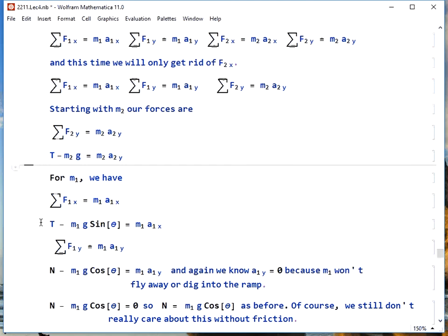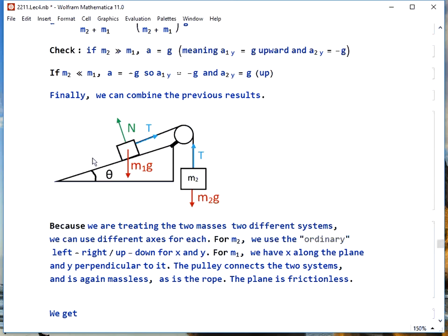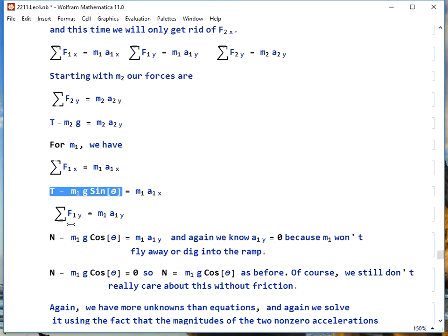For mass 1, in the x direction, we have T minus m1g sine theta equals m1a1x. Notice, that's because the block, the T is pointing in the positive x direction, and the component of m1g along the plane is downward in the negative x direction, trying to slide it down. In the y direction, we get N minus m1g cosine theta equals m1a1y, but again, we know a1y is 0, since m1 can't fly away or dig into the ramp.